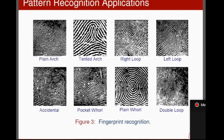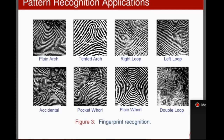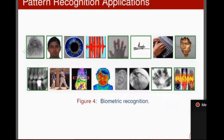These are fingerprint images. These images can also be used to identify an individual, or these images can also be categorized. For example, a machine should be able to tell whether this is a right loop or a left loop. Your application should take this image as input and produce the category as output — whether that input was a plain arch, a tented arch, or which category that image falls into.